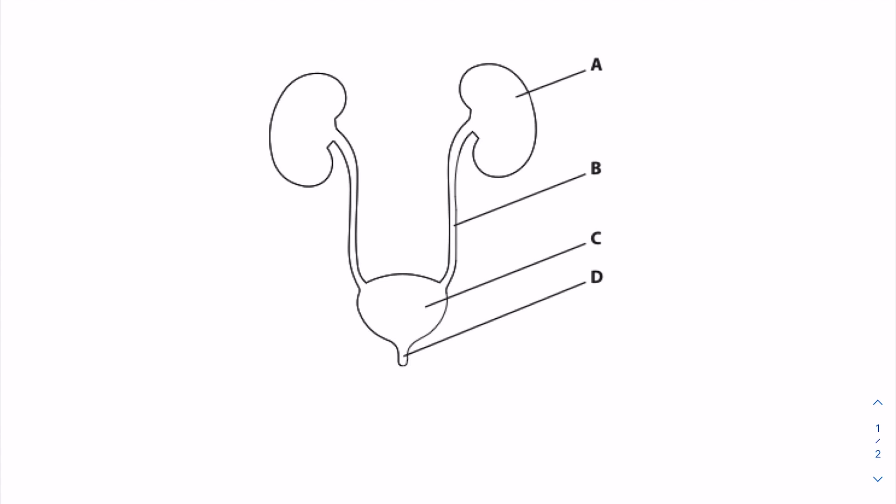Continuing on now with my diagram video for biology, so here we're looking at the excretory system, specifically the kidneys. I'll just label it up for you. Here's your kidney. Now remember the kidney is responsible for producing urine.